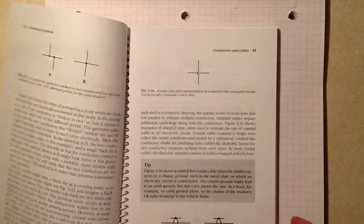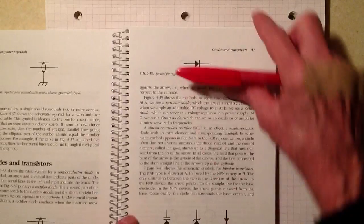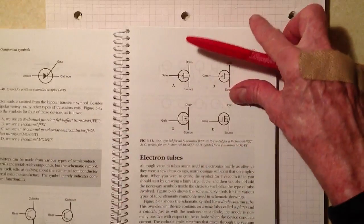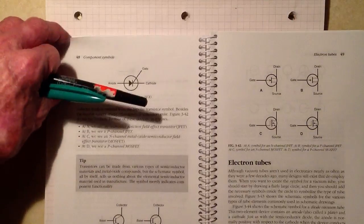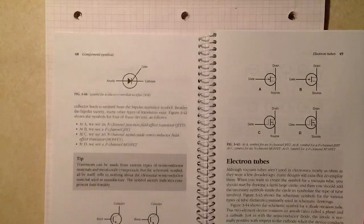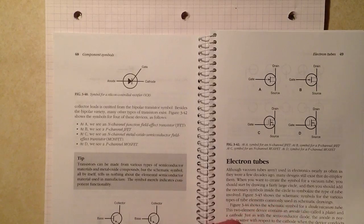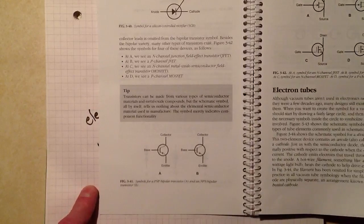Anyway, on pages 48 and 49 I believe we dealt with the symbols for field effect transistors. Well now maybe I'm getting ahead of myself here. Okay, yes, bipolar transistors on page 48.